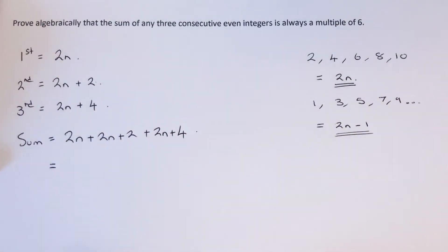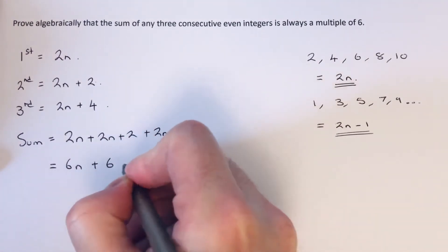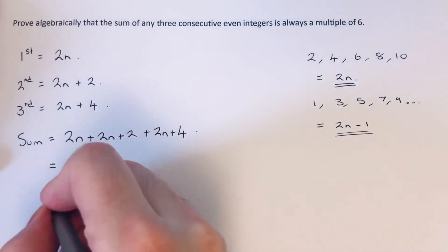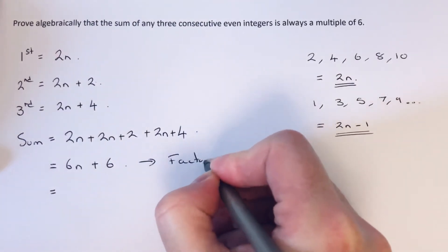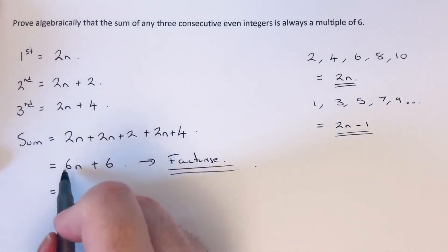If we simplify this, we get 6n plus 6. Now we've got to show that this is a multiple of six. The way you can do it is to factorize this expression.